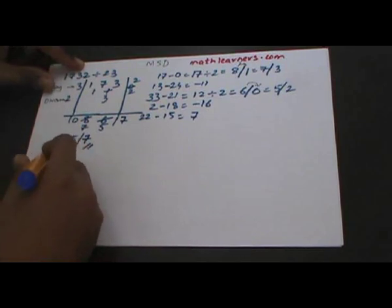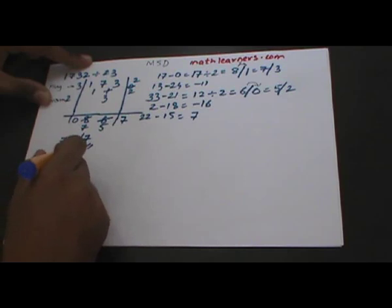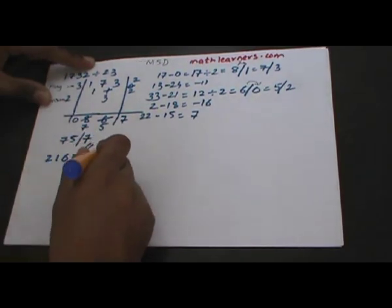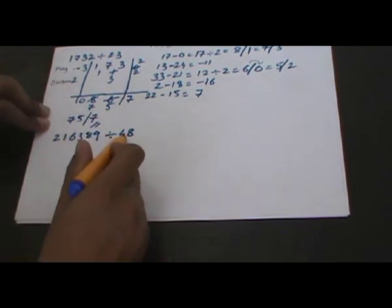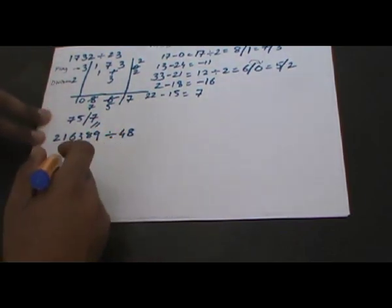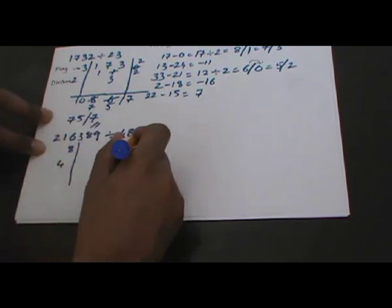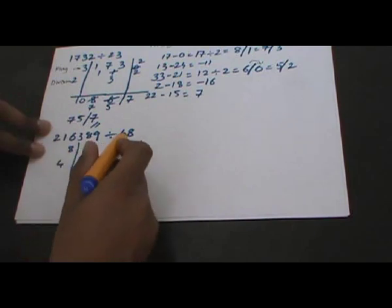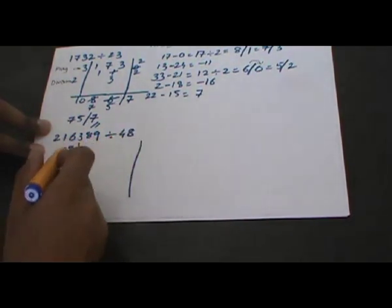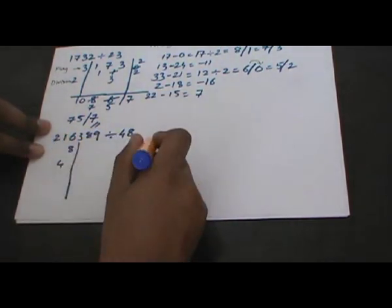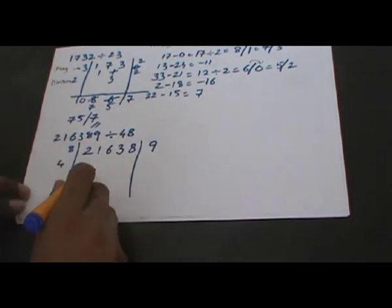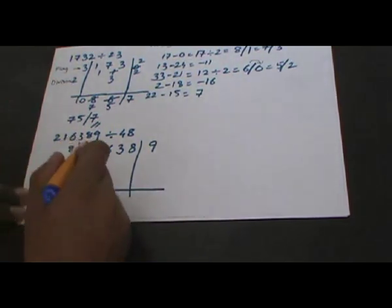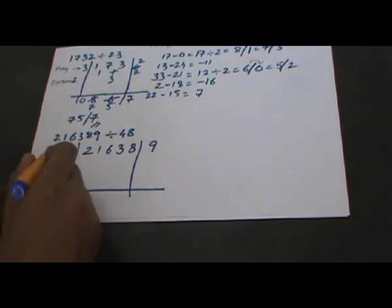Let's say suppose we have the division 216389 divided by 48. The divisor is 48, which we split into two parts: the new divisor will be 4 and the flag will be 8. As the flag is a one-digit number, the remainder part will have only one digit — that is 9 — and the rest of the digits, 21638, will be in the quotient part. So 4 will be acting as our divisor and 8 is our flag.